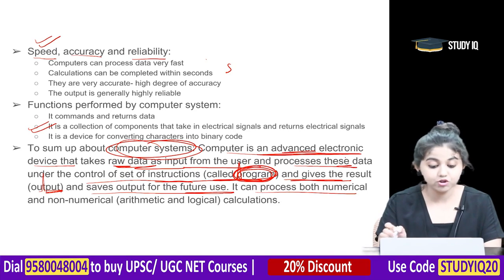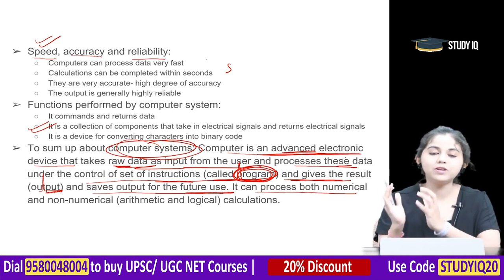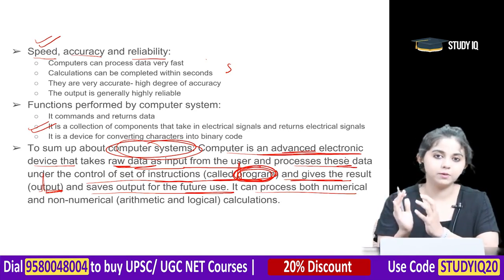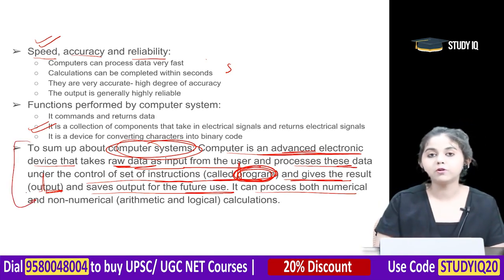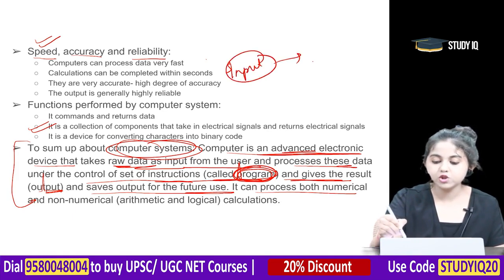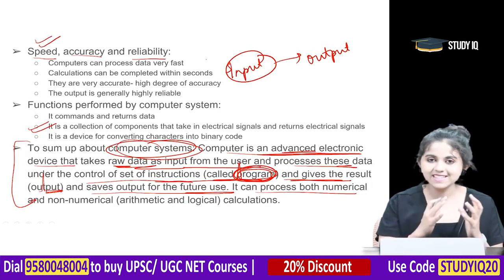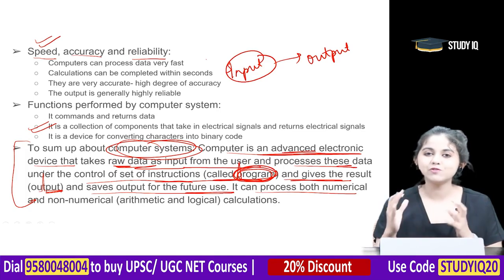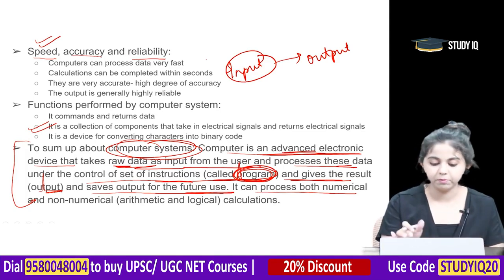To summarize, a computer is an advanced electronic device that takes raw input and gives highly reliable output. It can process both numerical and non-numerical calculations. These are the important features of computers and how the computer input and output functions are performed.